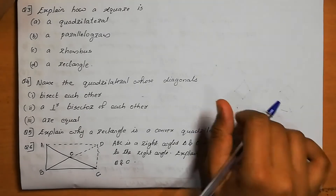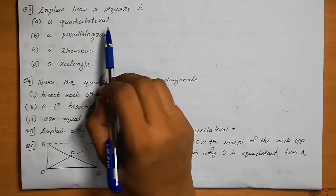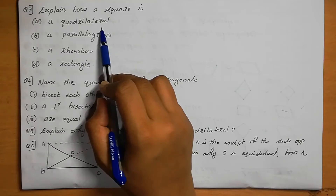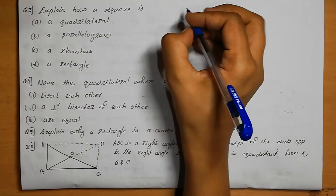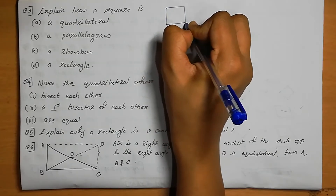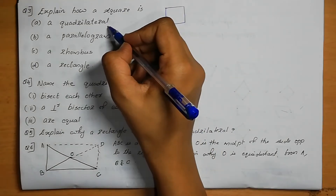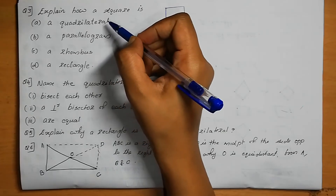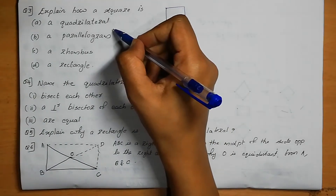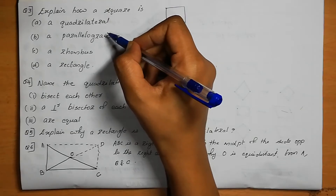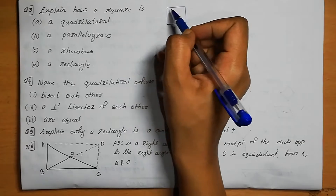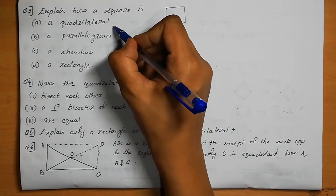Question number 3: Explain how a square is a quadrilateral. A quadrilateral means a four-sided figure. Square is a quadrilateral because all four sides are closed with line segments. So square is a quadrilateral.